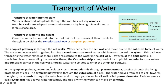In the symplast pathway, water and solutes cross the endodermis through plasmodesmata — gaps in the cell walls. Water moves through the cytoplasm of the cell, and when it reaches a cell wall it passes through a plasmodesmata. Each successive cell cytoplasm has a lower water potential than the previous one, so water moves through the cytoplasm by osmosis. This is a slower process compared to the apoplast pathway.